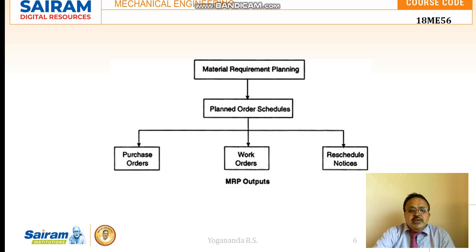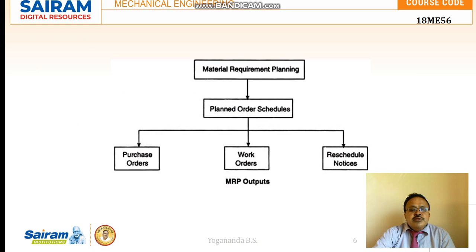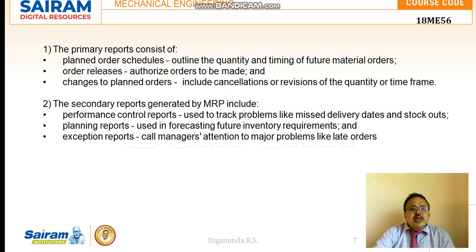MRP outputs are generated from the inputs of bill of materials, master production schedule, and inventory record file. Once these are processed, the outputs are purchase orders, work orders, and reschedule notices. The primary reports include planned order schedules, which outline the quantity and timing of future material orders — scheduling orders well in advance.